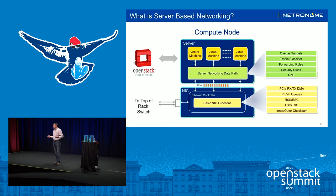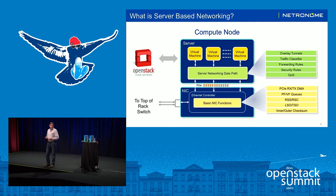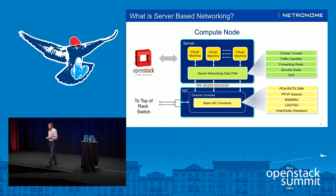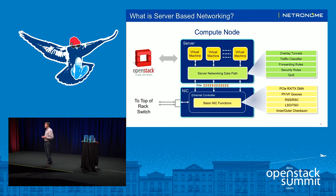Once the packet is delivered to the server, that's where the server networking data path takes over. This is where richer features are implemented, and these richer features are critical to successful deployments of OpenStack clouds. In OpenStack clouds, typically there is overlay network support to support things like network virtualization and multi-tenancy, and overlay tunnels such as VXLAN or other tunnel protocols need to be processed in the server networking data path.